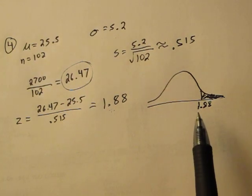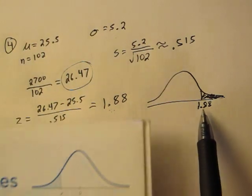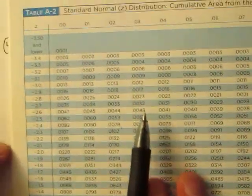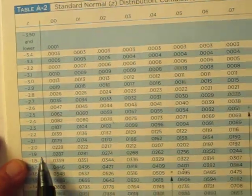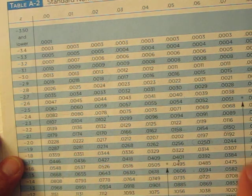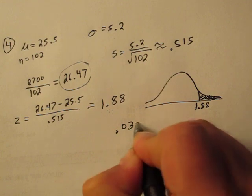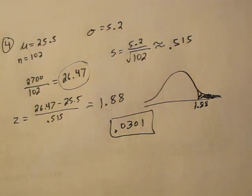The probability of getting a z-score greater than 1.88, and I'm going to use my negative trick here. 1.88. Looks like 0.0301 is the score we got. And that's the probability.